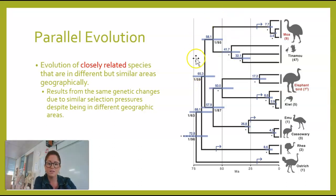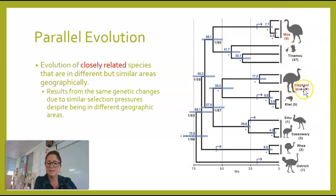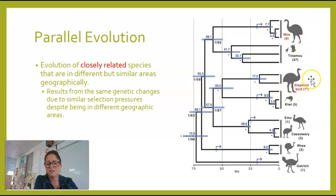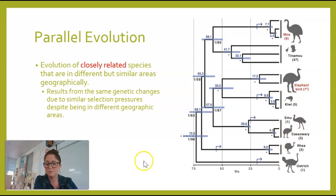We see where gigantism evolved in two different places — in New Zealand at some point and in Madagascar at some point. Both of those species have now become extinct, but it's worth noting that not only the gigantism but also the flightlessness evolved multiple times in different places due to similar selection pressures in different places around the world.